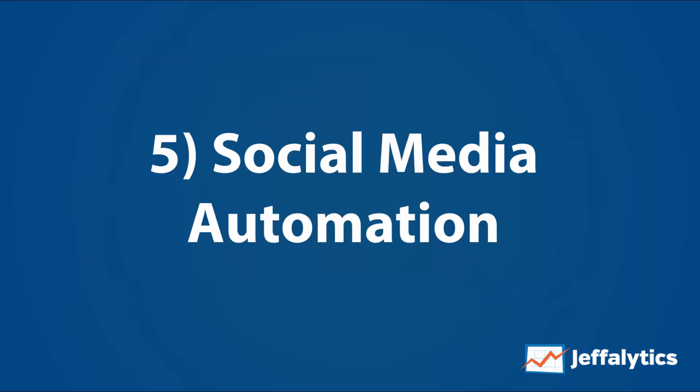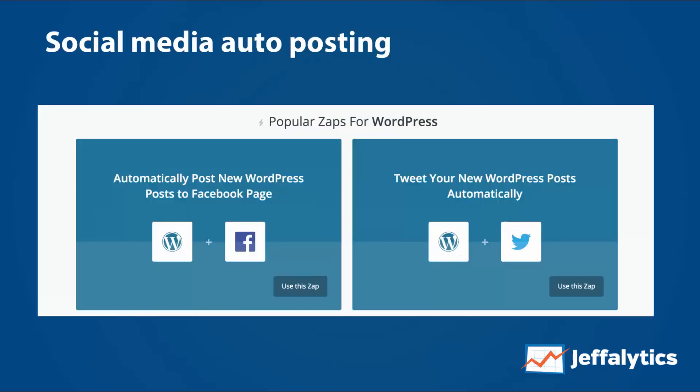And finally: social media automation. We don't actually use Zapier's social media auto-posting capabilities because we have several tools for that and we also like Buffer. But if you wanted to, you could make it so that every single new WordPress post goes to your Facebook page, Twitter, or wherever you want it to go.